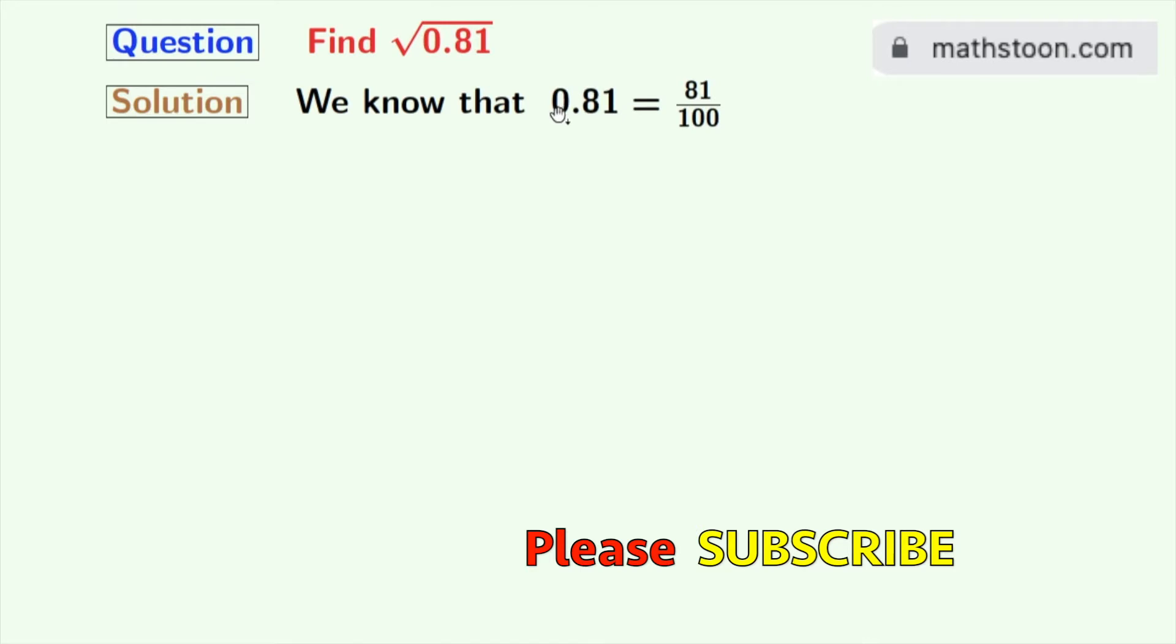Firstly, we will express this decimal number as a fraction, so we get 0.81 is equal to 81 by 100.